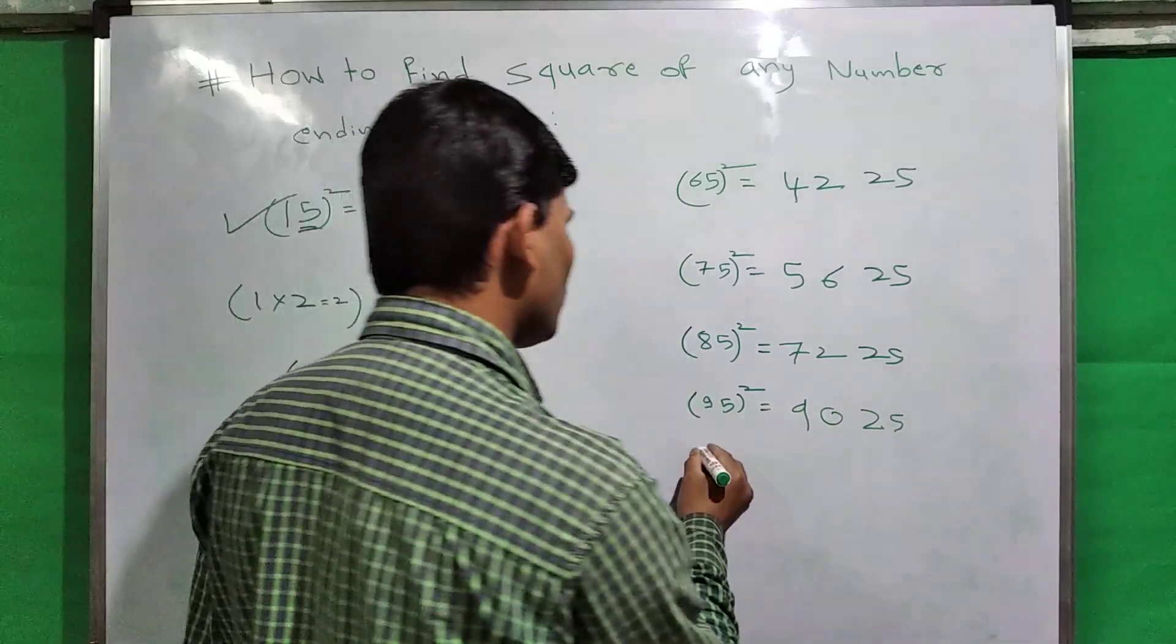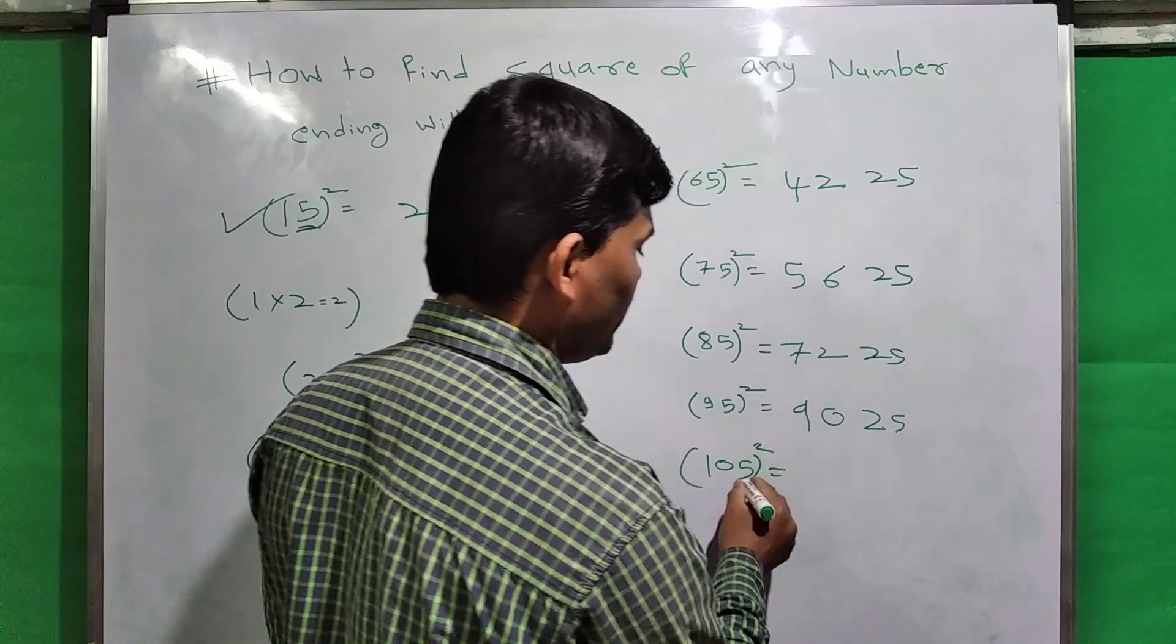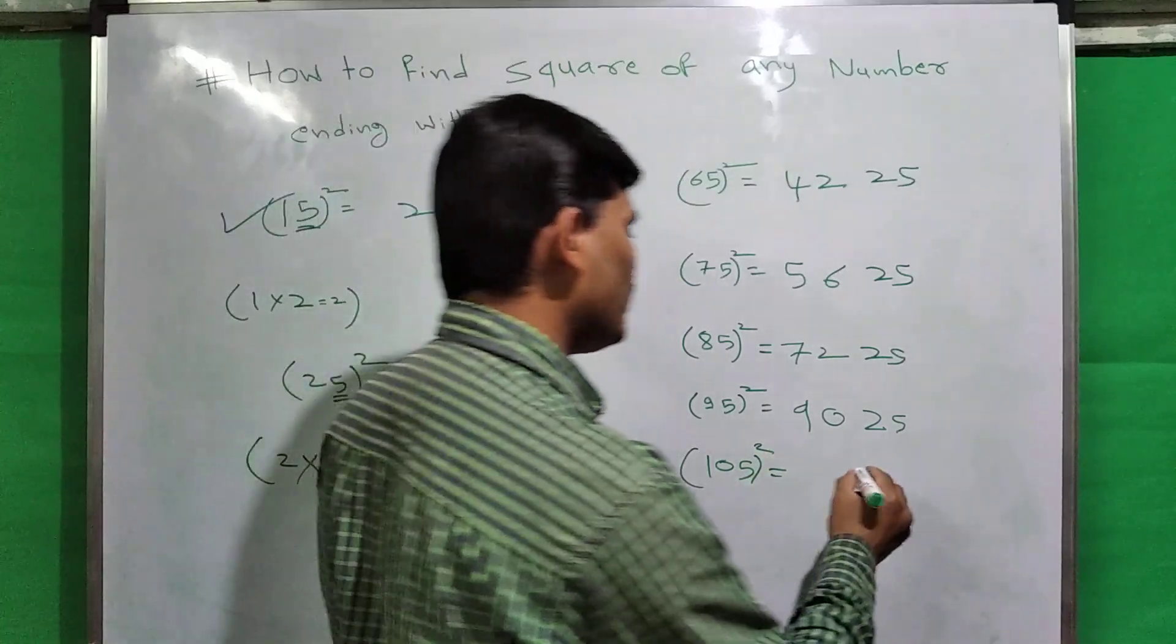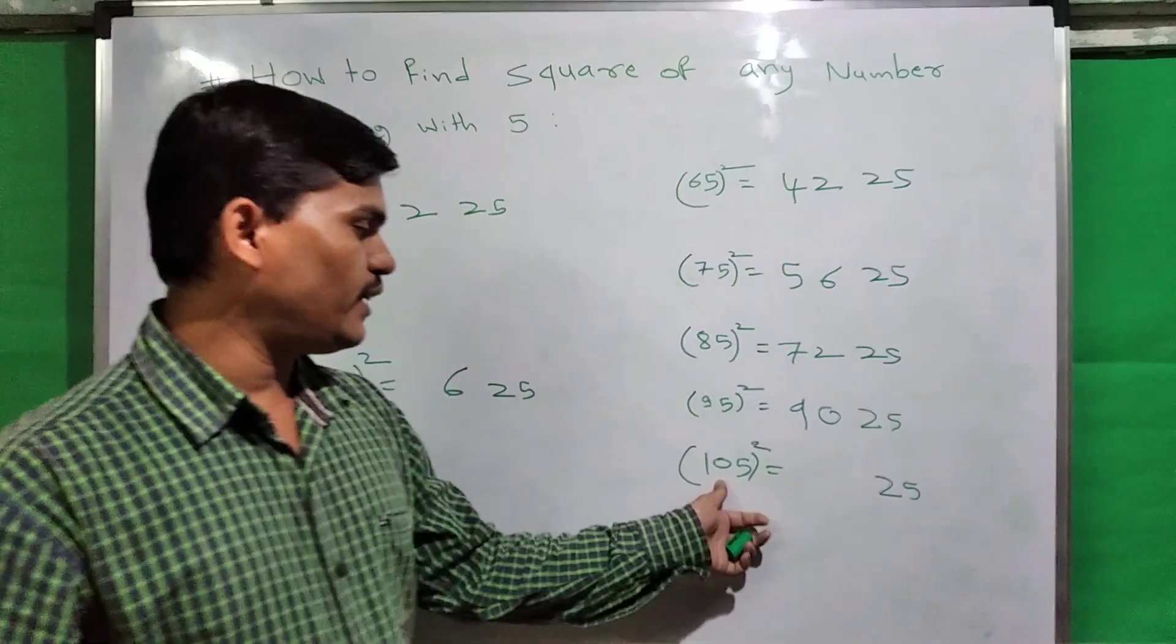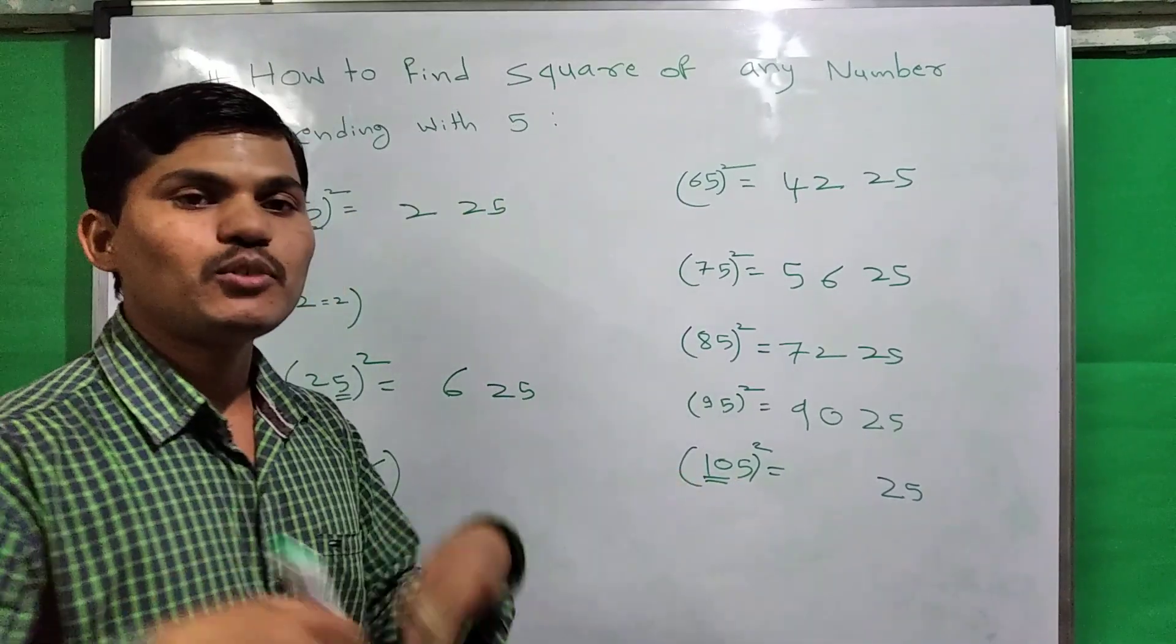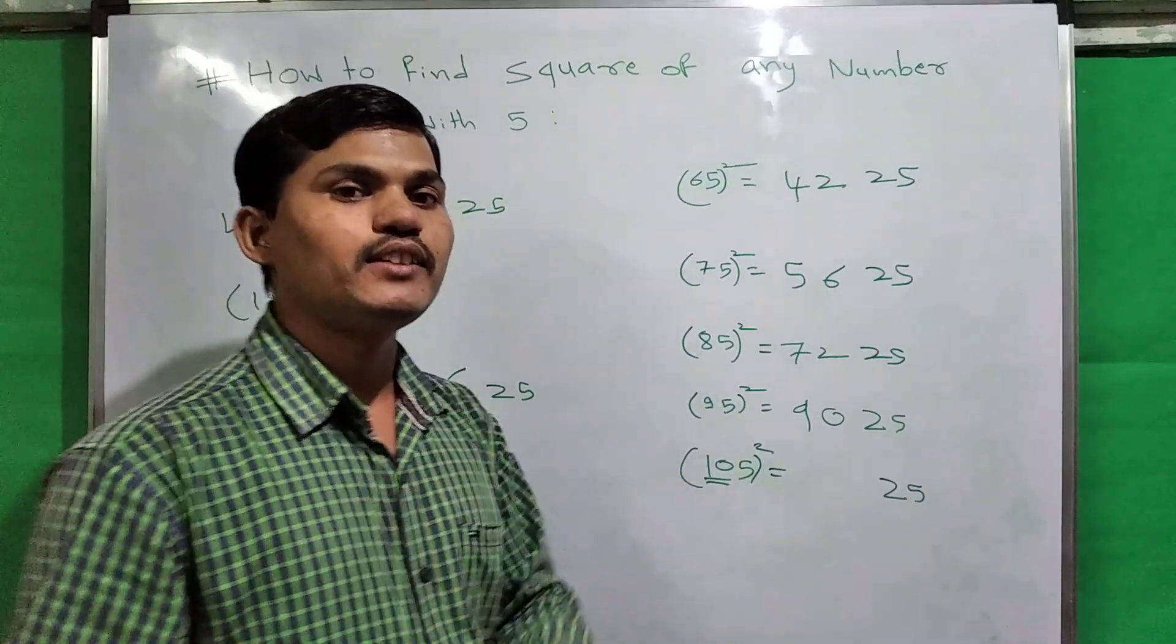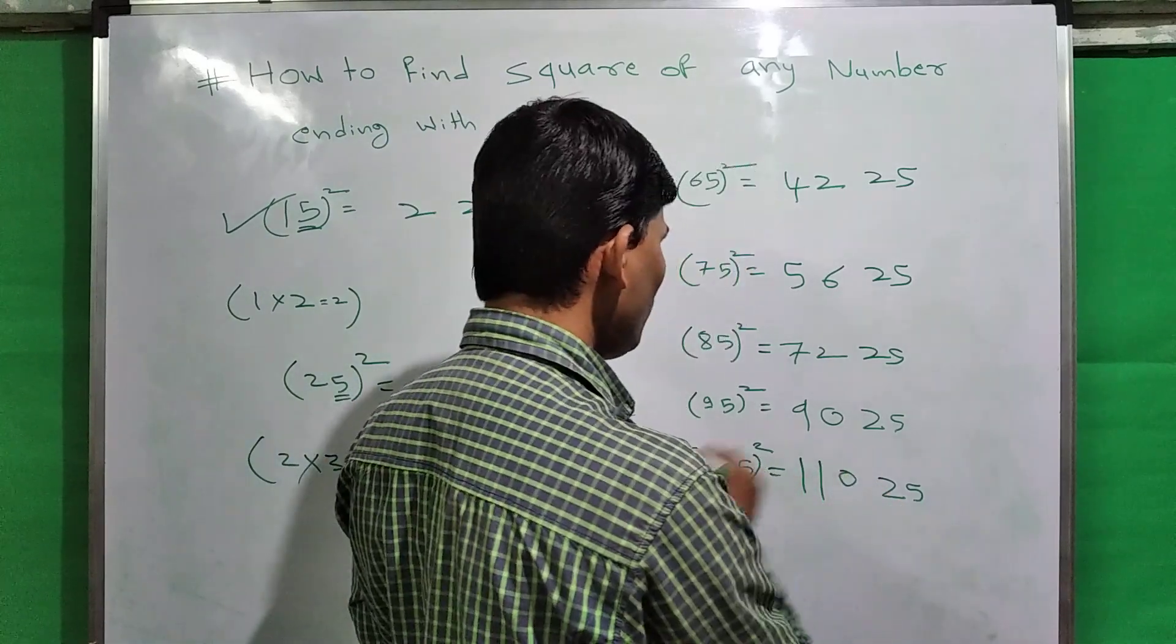We can also find the square of any number. Suppose 105 square. Here first, the unit digit is 5. So write down the square of 5: 25. And 10 - the next number of 10 is 11. So 10 times 11 is 110. Write down here: 11025. This is the answer of 105 square.